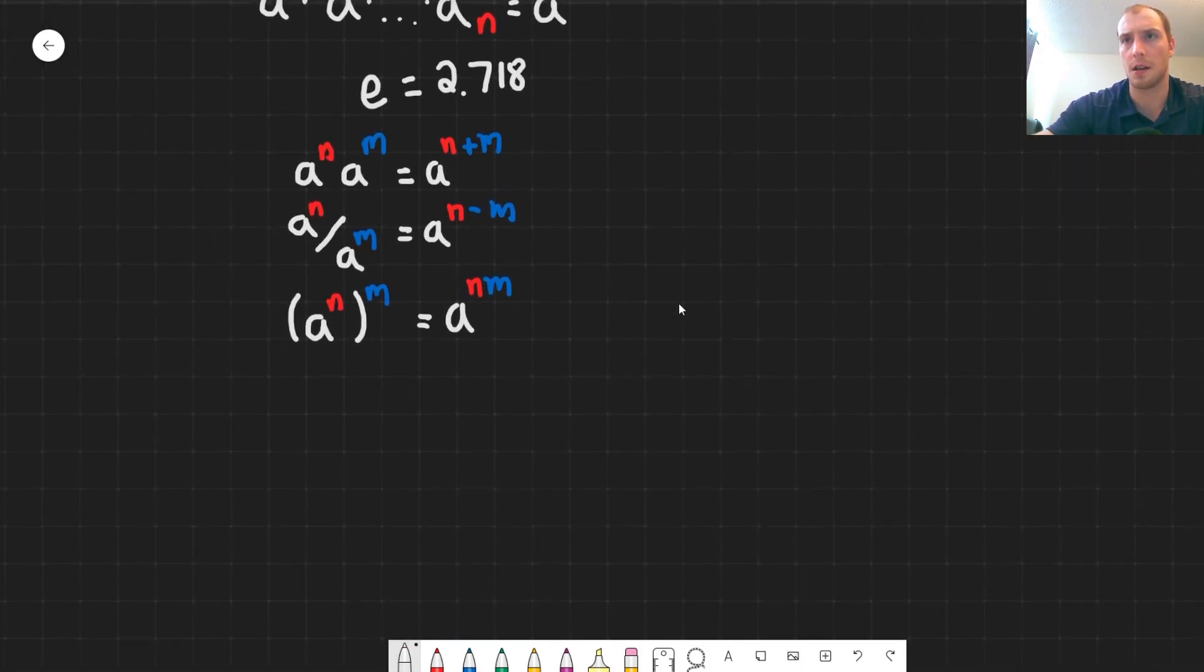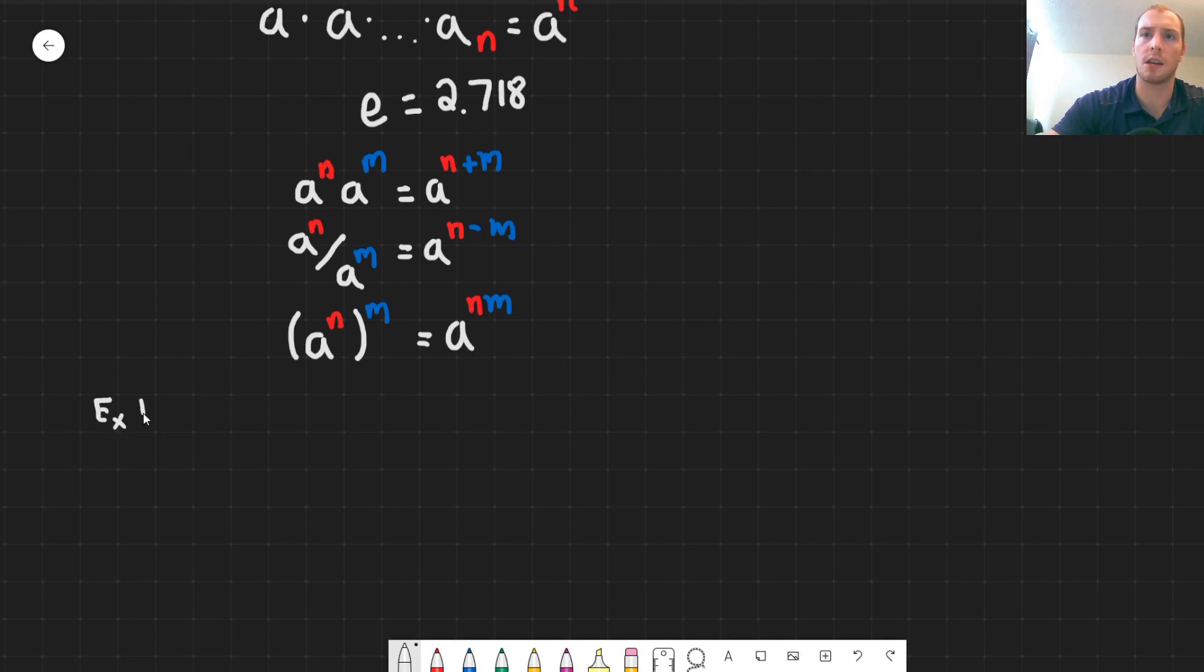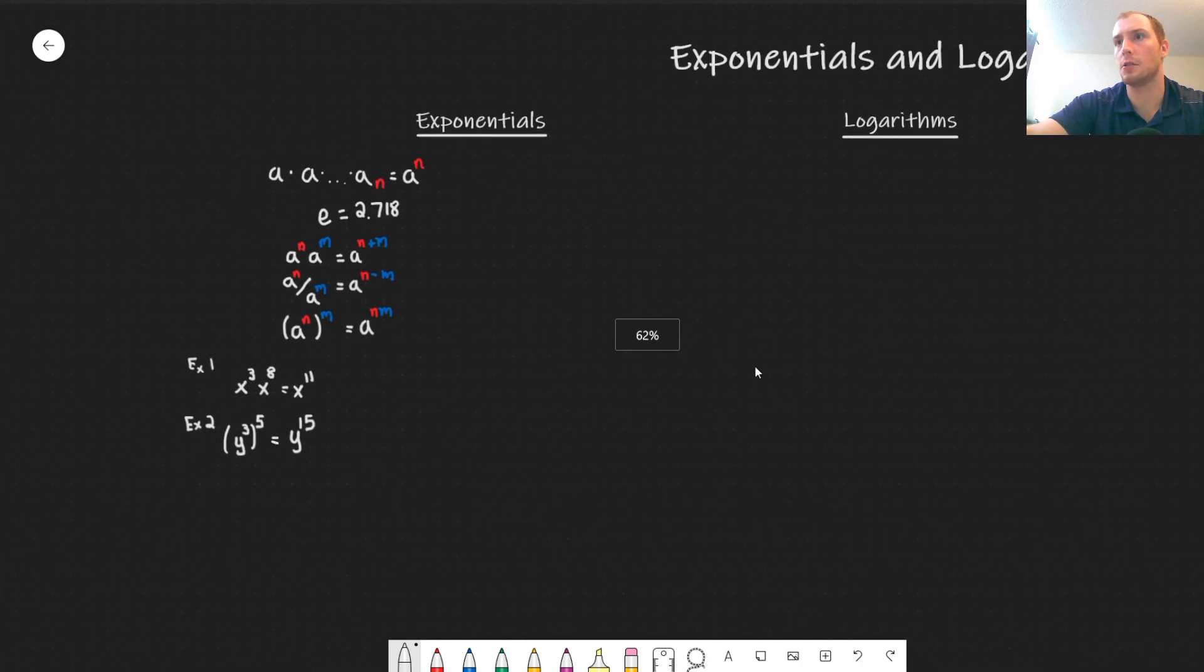So now we'll just get into a couple examples here. For example one we have x cubed times x to the 8. So this is our very first law a to the n times a to the m. So we just add the two exponents together. So this becomes x to the 11. Similarly we'll do another example. So our example two here. We have y cubed and then we raise to the power of 5. So this is our third example a to the n m. So we're going to multiply the two exponents together. So this becomes y to the 15. And I have another example in the PDF document. Check the description below if you want to go through that.